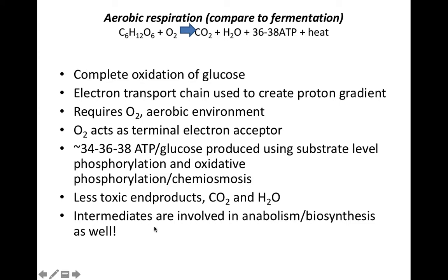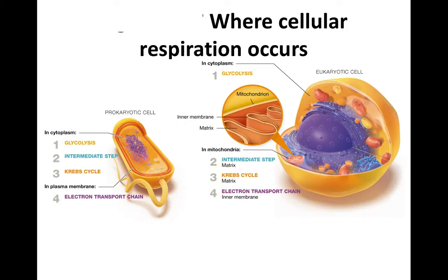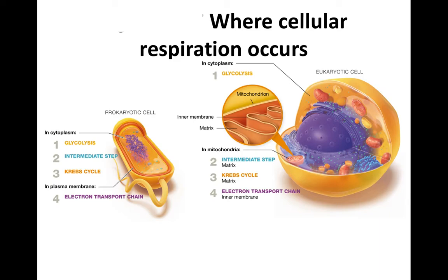The intermediates in aerobic respiration are also used in anabolic biosynthetic pathways. In prokaryotic bacterial cells, glycolysis enzymes are in the cytoplasm, as are the enzymes for the Krebs prep and Krebs cycle. However, the electron transport chain is in the cell membrane, as is ATP synthase. That covers the location of all stages of aerobic respiration in bacteria.